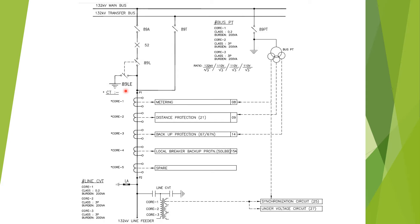As you can see from the single line diagram, if 89T is closed — that is, the feeder is drawing power from the transfer bus — then we cannot close the 89LE. So one interlock is provided from the 89T auxiliary contact, that is the bus transfer isolator auxiliary contact, to the 89LE that is the line earthing switch.